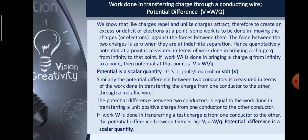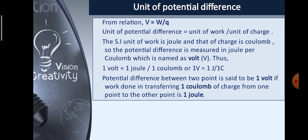The potential difference between two conductors is equal to the work done in transferring a unit positive charge from one conductor to the other. If work W is done in transferring a test charge q from one conductor to the other, the potential difference between them is V1 − V2 = W / q. Potential difference is a scalar quantity. The unit of potential difference is the unit of work divided by unit of charge. The SI unit of work is joule and that of charge is coulomb. So the potential difference is measured in joule per coulomb, which is named as volt. Thus, 1 volt = 1 joule / 1 coulomb, written as 1 V = 1 J / 1 C. Potential difference between two points is said to be 1 volt if the work done in transferring 1 coulomb of charge from one point to the other is 1 joule.